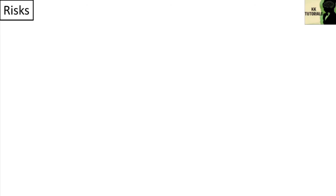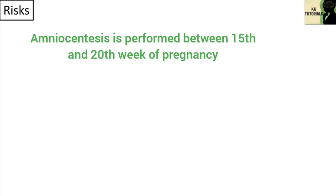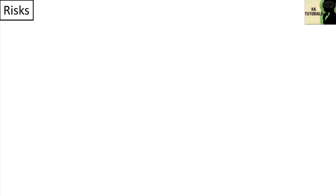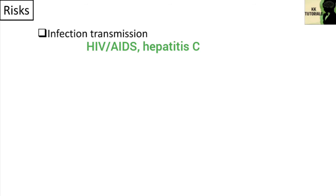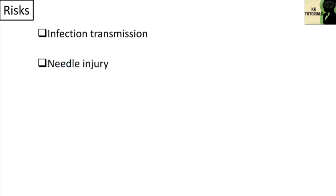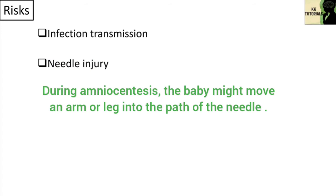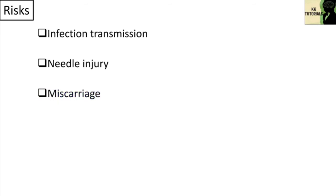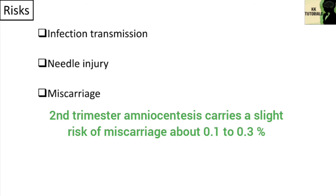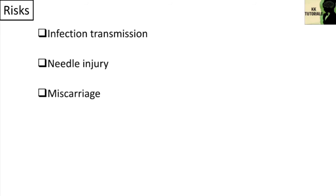What are the risk factors of amniocentesis? Amniocentesis is performed between the 15th and 20th week of pregnancy; performing this test earlier may result in fetal injury. If you have an infection such as HIV, AIDS, or Hepatitis C, the infection might be transferred to your baby during amniocentesis. During the procedure, the baby might move an arm or leg into the path of the needle, though serious needle injuries are rare. Second trimester amniocentesis carries a slight risk of miscarriage of about 0.1–0.3%, and the risk is higher for amniocentesis done before 15 weeks of pregnancy.